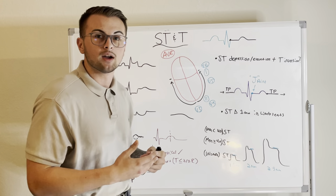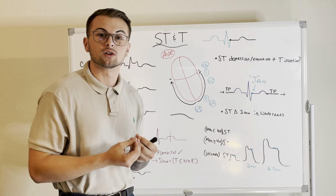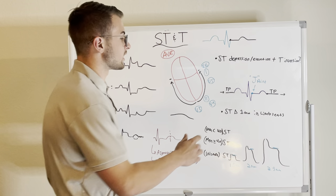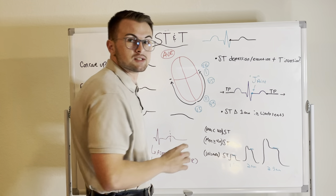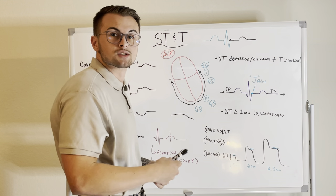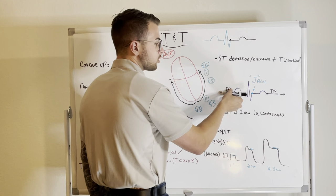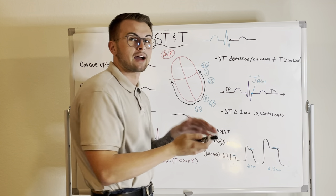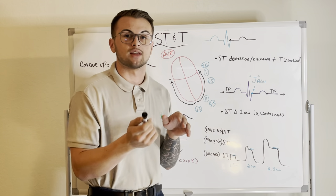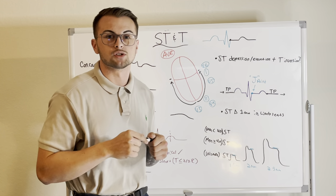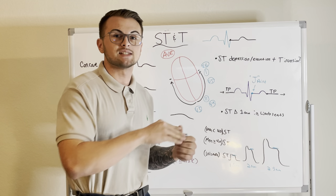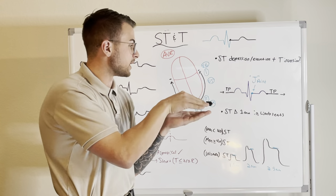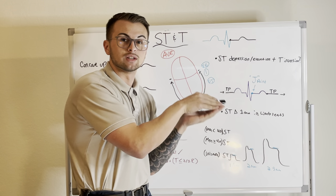The ST segment itself can also be indicative of pathology. The ST segment should be directly in line with the TP segment. To measure this, take a ruler on the TP segment — if it's not directly in line with the ST segment, then we have some sort of depression or elevation that requires further evaluation. It is normal to have an ST elevation or depression of one millimeter from the baseline in the limb leads.